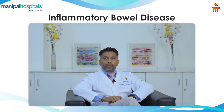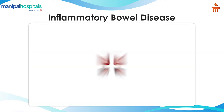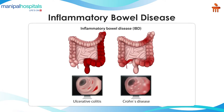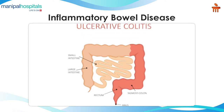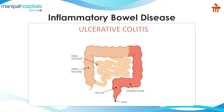Inflammatory bowel disease includes the entities of Crohn's and ulcerative colitis. Crohn's is a disease that largely can affect any portion of the gastrointestinal tract, whereas ulcerative colitis is focused on the large intestine, which includes the colon and the rectum.